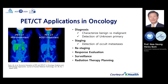This is a summary of PET-CT applications in oncology. PET-CT can be used effectively for diagnosis — it can characterize a tumor as benign or malignant. In the case of malignancy of unknown primary, PET-CT can survey the whole body and detect the primary lesion. PET-CT can also be used for staging, especially M-staging by detection of occult metastasis. Other applications include restaging, response evaluation, surveillance, and radiation therapy planning.